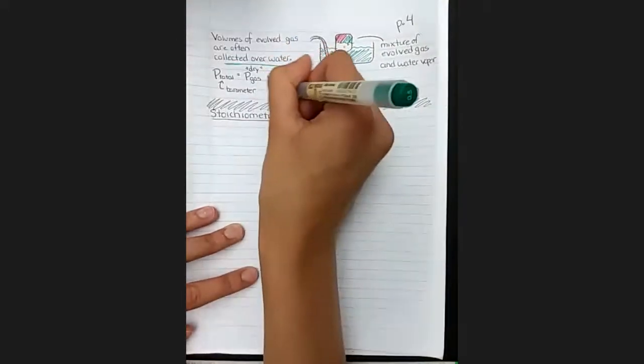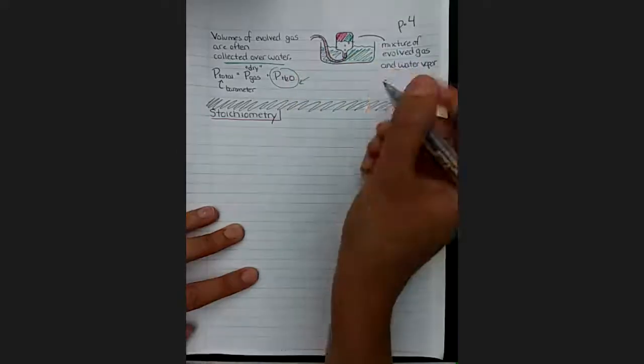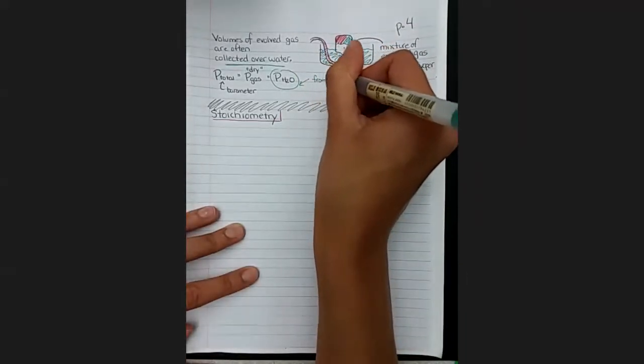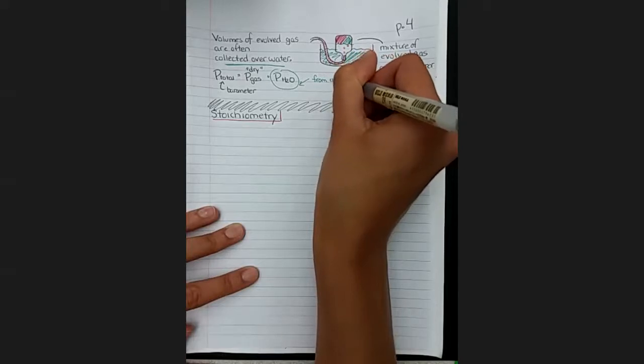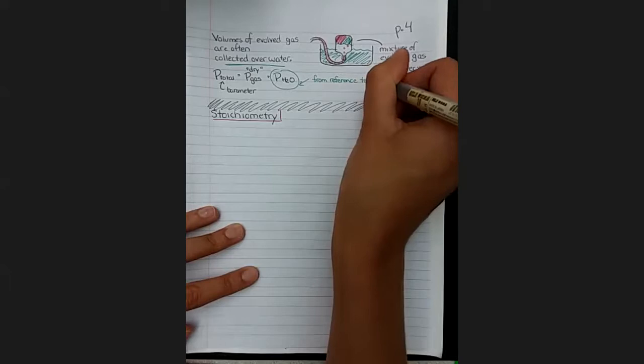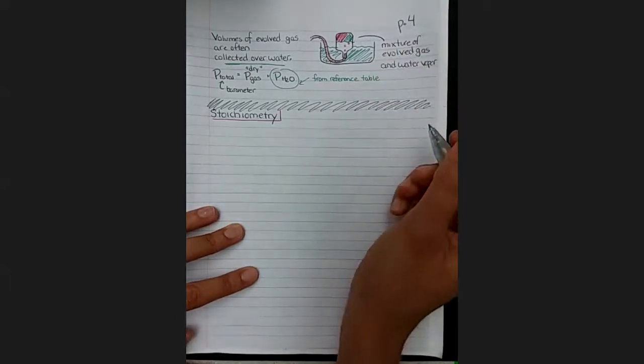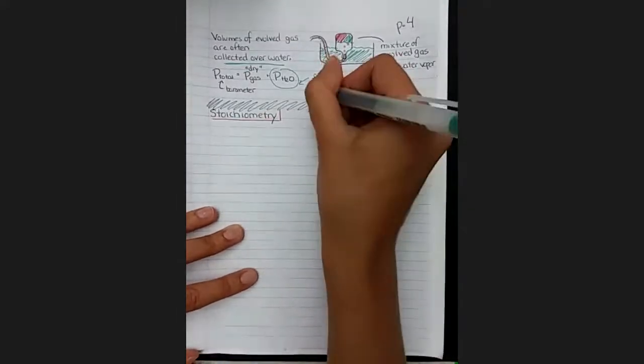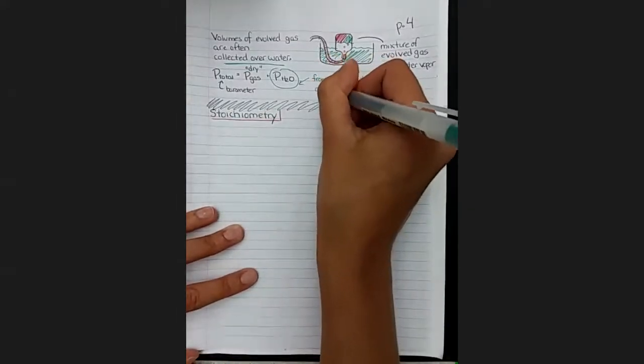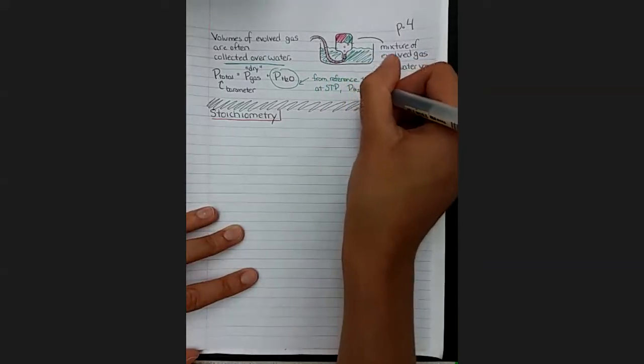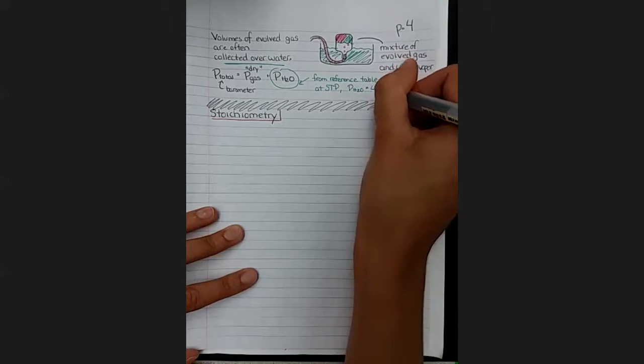Lucky for us, we happen to know quite a lot about water. And there are reference tables that give you the partial pressure of water at a variety of temperatures. So all you have to do is look it up and then measure the pressure off of the wall. Here's an example one. At STP, the vapor pressure of water is 4.6 torr.